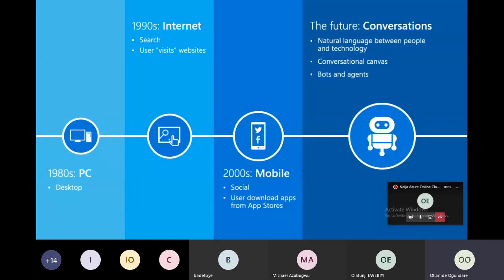In the 1980s, what was in town were various desktops — the big desktops with those huge backs. Then in the 1990s, you saw the internet come into place, and people could visit websites and communicate with people all around the world. In the 2000s, we had mobile phones. A lot of things have changed between 1980 and now, and I would like us to notice the trend between 1980 and the future.